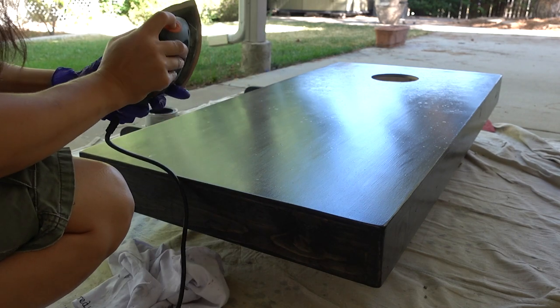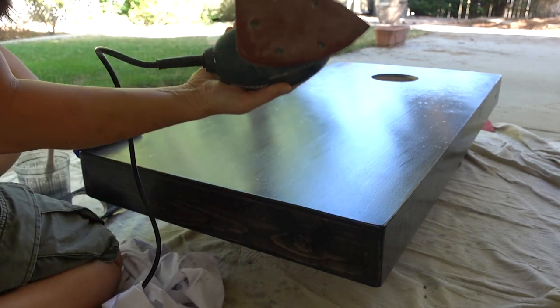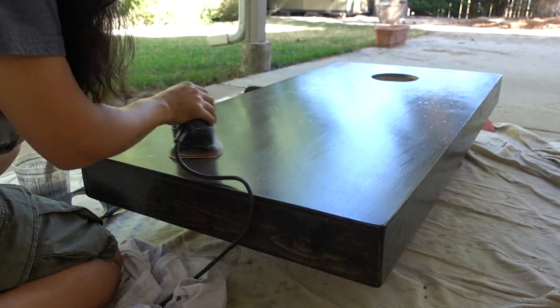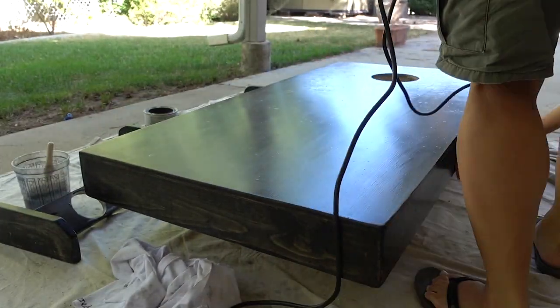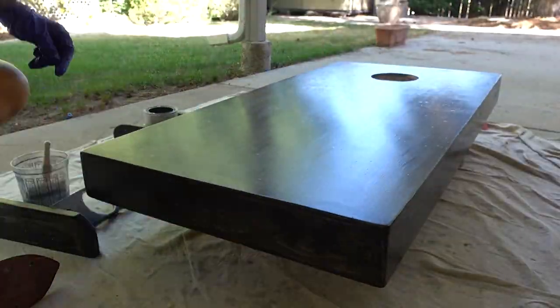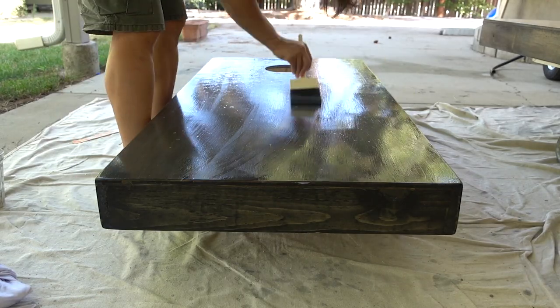The next day I sanded the boards lightly with a palm sander using 400 grit paper. Sanding will help even out the surface of the boards for a smoother finish, so I wanted to do this just before I finished the poly coating process. Wipe the boards clean after you sand with a damp cloth, then paint the last few coats of poly to finish it off.